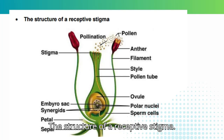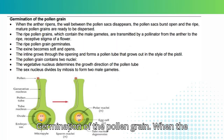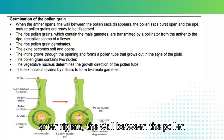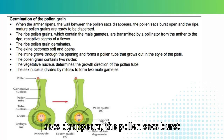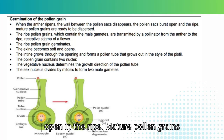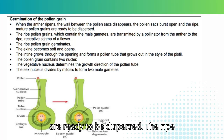The structure of a receptive stigma. Germination of the pollen grain: when the anther ripens, the wall between the pollen sacs disappears; the pollen sacs burst open and the ripe, mature pollen grains are ready to be dispersed.